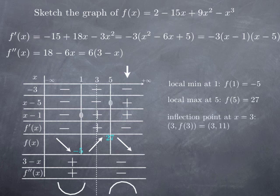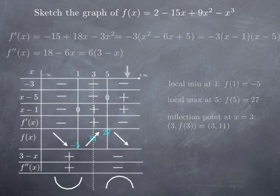Therefore, we have an inflection point at x equals 3. It has first coordinate 3, second coordinate f of 3. And if I plug 3 in the function, I obtain 11. So I can insert the coordinates of my inflection point in the chart. And now the chart contains all the information I need to sketch the graph. So this is what we move to now.